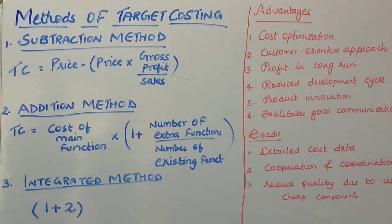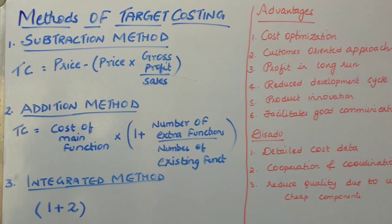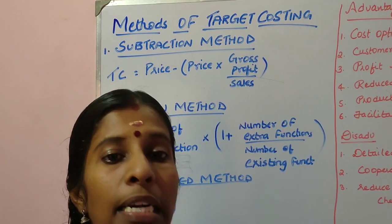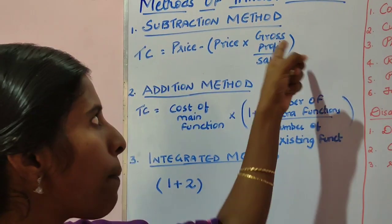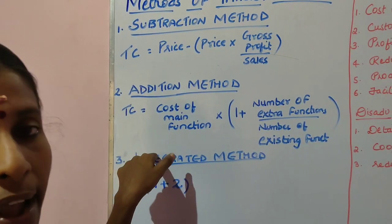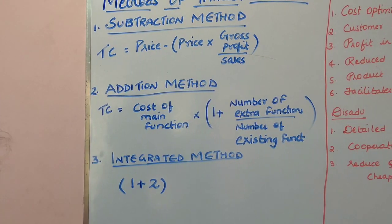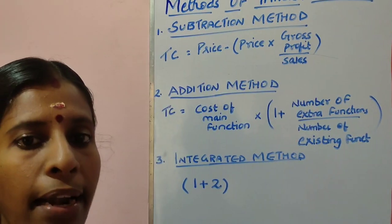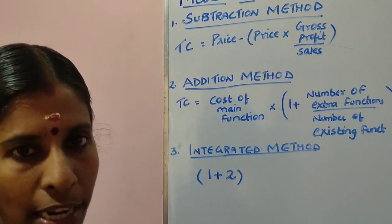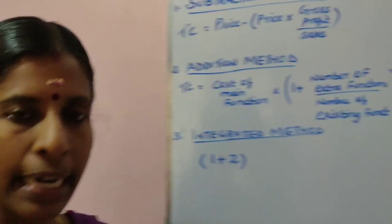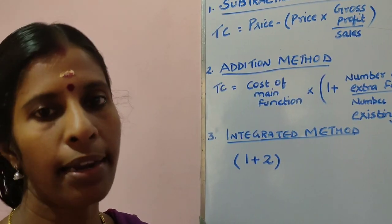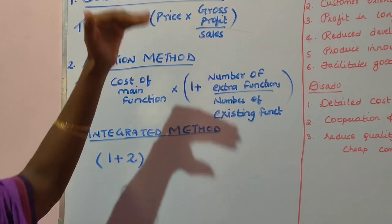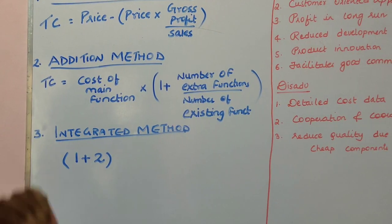The third and last method is the integration method. The integration method is a combination of the subtraction method and the addition method. Under this method, all departments come together, discuss, interact, and collectively decide on a common target cost.